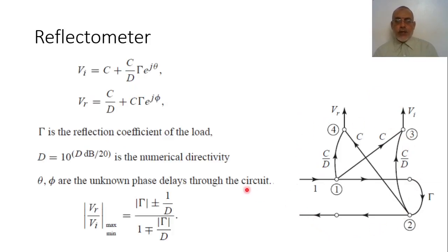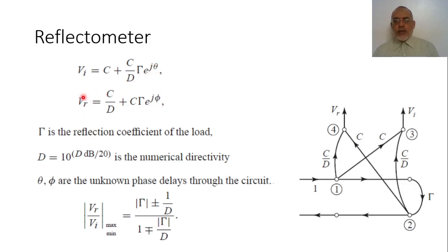By solving the signal flow graph, the total voltage at port 3 (V incident) equals C plus (C/D) multiplied by the reflection coefficient Γ and a phase shift e^(jθ), plus the directivity term C/D. Here Γ is the reflection coefficient of the load, D is the numerical directivity equal to 10^(directivity_dB / 20), and θ and φ are unknown phase delays through the circuit.